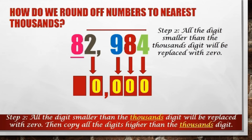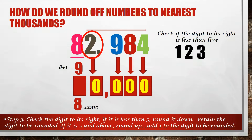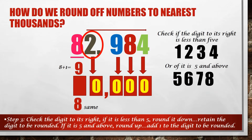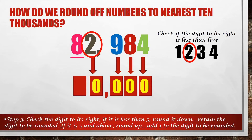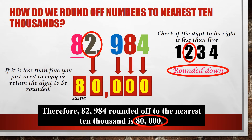Now, how about the digit we need to round off? To determine if we keep the same digit or increase it by 1, we check if the next digit to the right of the underlined digit is less than 5 (1, 2, 3, 4) or exactly 5 and above (5, 6, 7, 8, 9). Since the digit is 2 and it is less than 5, we simply copy the digit in the ten-thousands place. Therefore, 82,984 rounded off to the nearest ten thousands is 80,000.